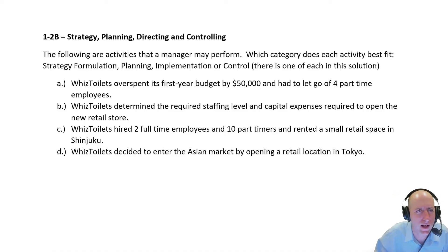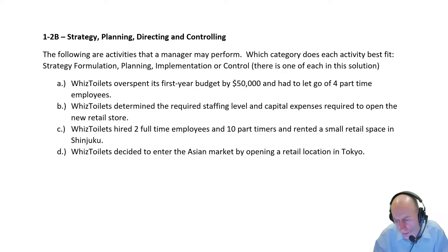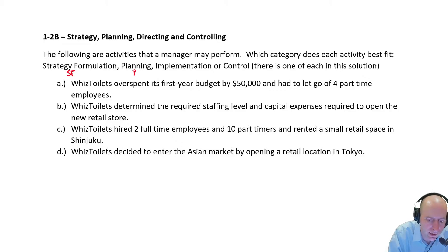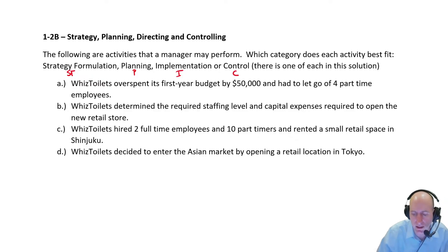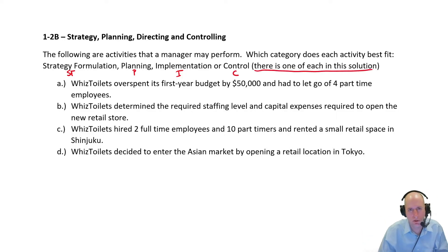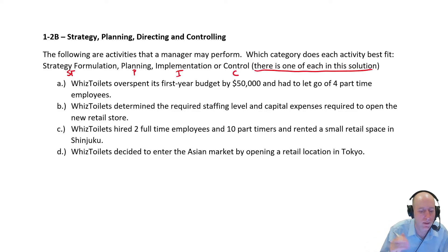Let's see if we can categorize them here. The following are activities that a manager may perform — which categories does each activity best fit? Strategy formulation we'll abbreviate as SF, Planning as P, Implementation as I, and Control as C. There is one of each in this solution, so each category is used only once.